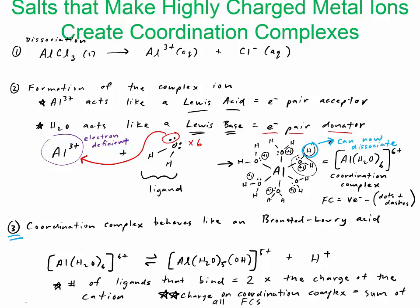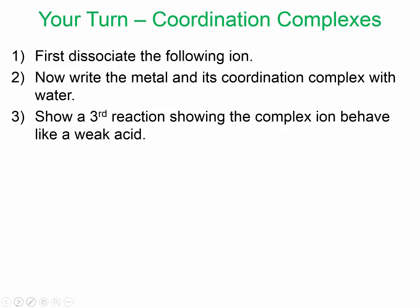So let's go to an example for you guys to try. So it says first dissociate the ions. So let's say we have iron(II) chloride, FeCl2. Okay, so first dissociate this ion. So you need to write three reactions. So one, show the dissociation, exactly what I did in the example.